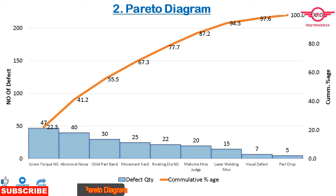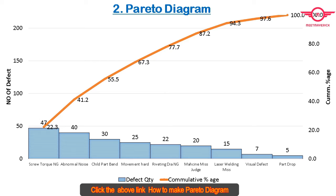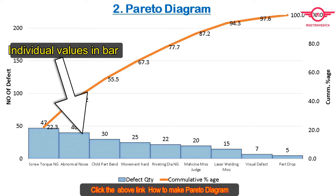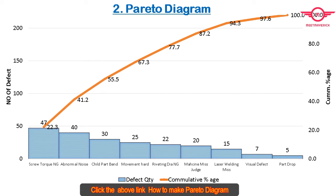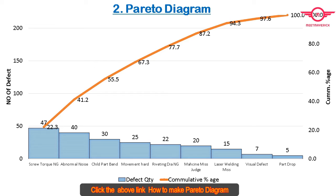The Pareto Chart is a tool to select the vital few from the trivial many. It is a statistical tool that contains both bars and line graphs, where individual values are represented in descending order by bars, and the cumulative total is represented by the line. The purpose of the Pareto Chart is to highlight the most important factors among a set of factors. This helps to study and analyze the occurrence of an event in a process and identify the biggest factor.